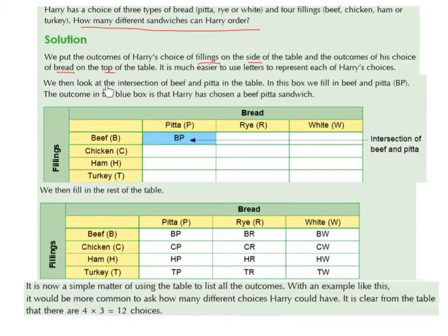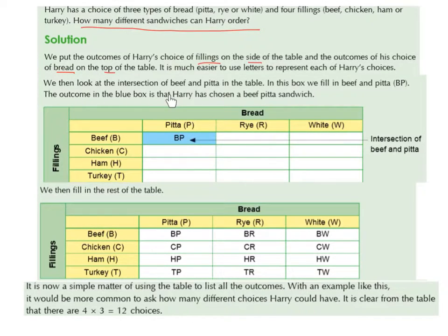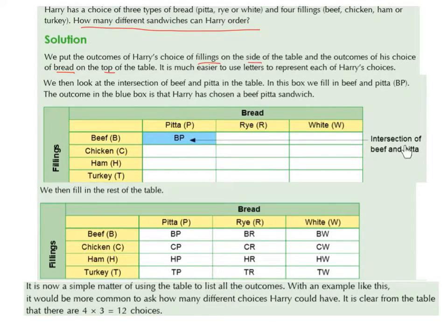We then look at the intersection of beef and pitta in the table. In this box, we fill in beef and pitta as BP. The outcome in the blue box is that Harry has chosen a beef pitta sandwich, so we've got BP, which represents a beef and pitta sandwich.